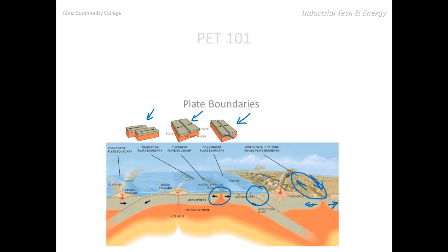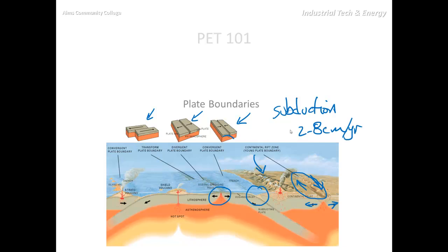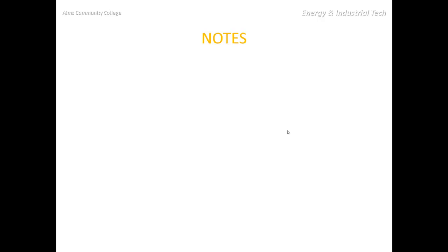Whenever we've got a subduction zone or an area where two plates meet, we end up with other features as well. Notice we've got mountains, and this happens because there are deformations that occur underneath the surface as well as on top of the surface any time that subduction occurs. Subduction motion is anywhere from two to eight centimeters per year. For your notes, think about why there are such drastic differences between the oceanic and continental crusts.